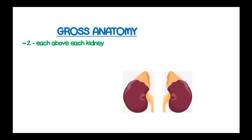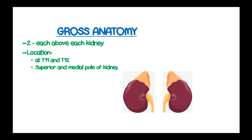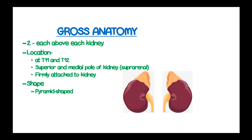We have two adrenal glands, each located above each kidney. They are located at the level of thoracic vertebrae 11 and 12. They are superior to the middle pole of the kidney, therefore referred to as suprarenal. They are firmly attached to each of the kidneys. These adrenal glands are pyramid-shaped and they weigh about 4 grams each.